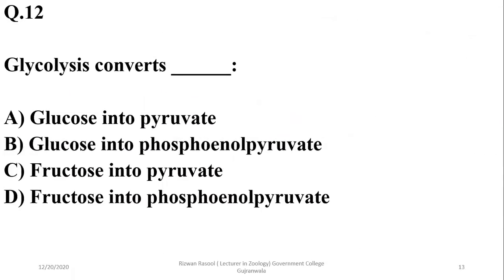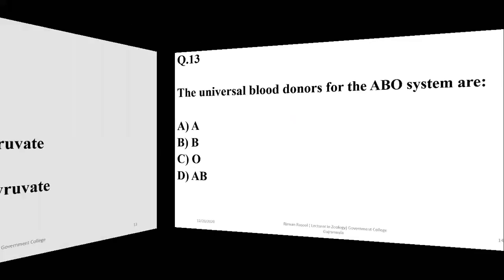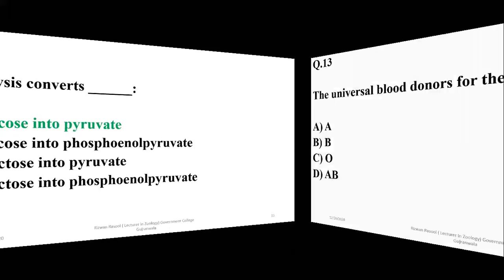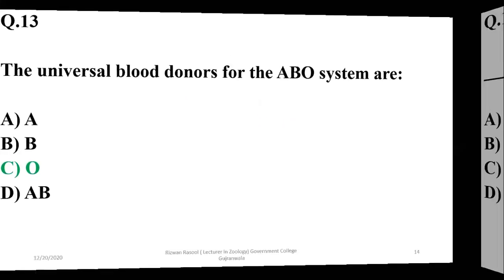Question 12: Glycolysis converts glucose into pyruvate. Question 13: The universal blood donor for the ABO blood-based system is O.